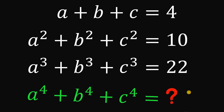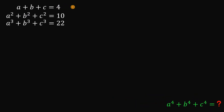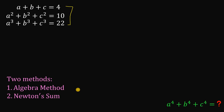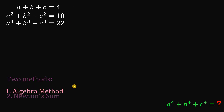Pause this video right now and see if you can answer this question, because I will show you two different solutions. Given these three equations, the goal is to evaluate the expression a to the fourth plus b to the fourth plus c to the fourth. Our follower says this is the hardest algebra problem, so let's see. We will solve this using two methods: the first is the algebra method, and the other is using Newton's Sum. Let's begin with the algebra approach.